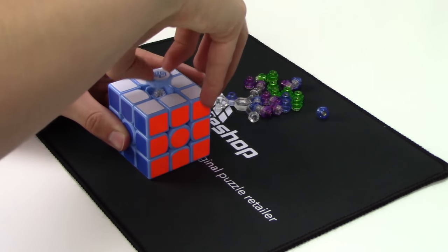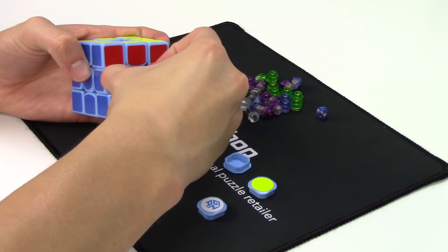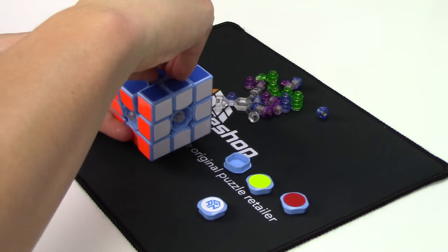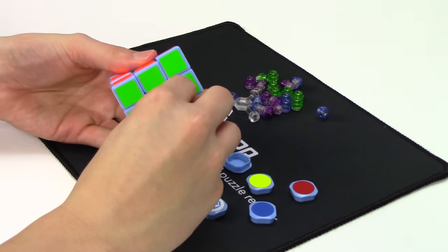First things first, I got out all of the new springs that I'm going to need to change out. And then I took off all of these center caps and started to unscrew the clear springs that come standard in the puzzle.